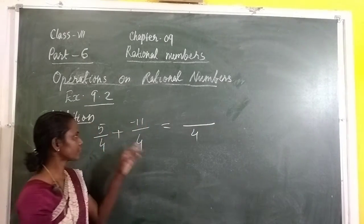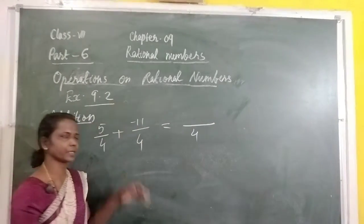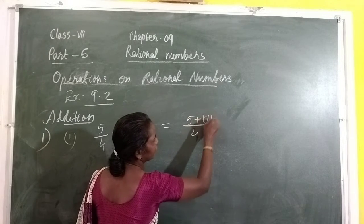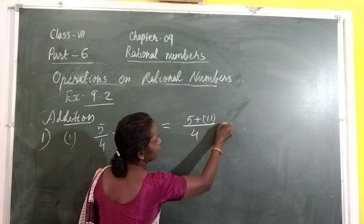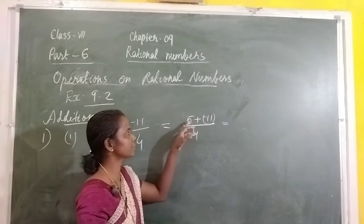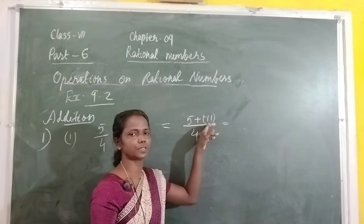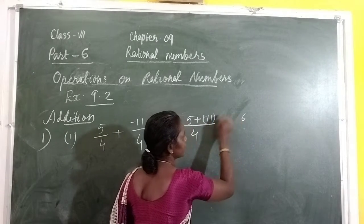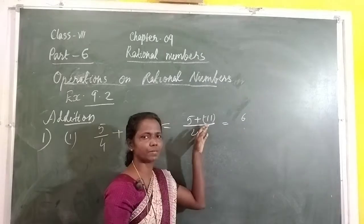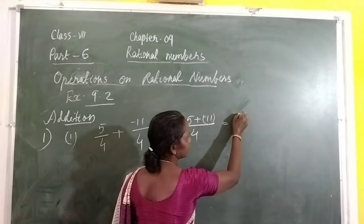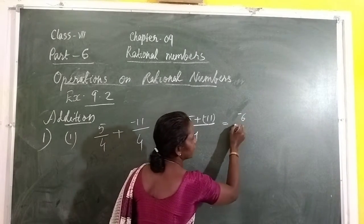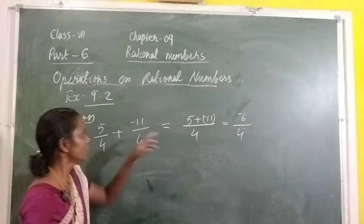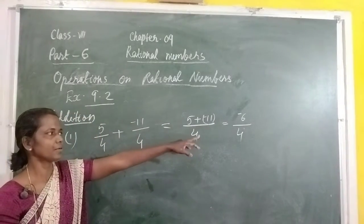Next we add the numerators: 5 plus negative 11. One is positive and the other is negative, so find out the difference. Difference is 6, and the biggest number is 11, which has a negative sign. So write negative: negative 6 by 4. The answer is negative 6/4.